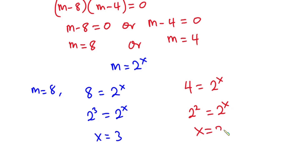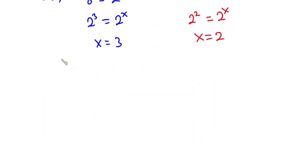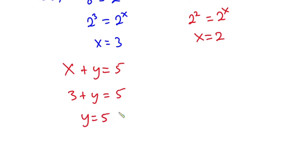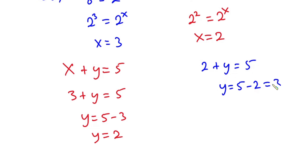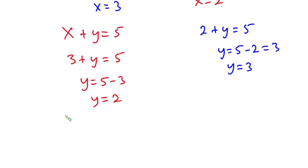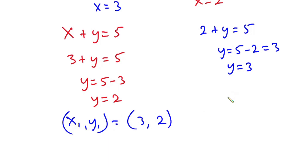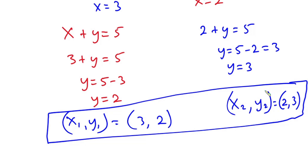Now let's substitute these values into equation 2, that is x plus y equals 5. When x equals 3, we have 3 plus y equals 5, so y equals 2. When x equals 2, we have 2 plus y equals 5, so y equals 3. Therefore our solutions are x₁, y₁ equals (3, 2) and x₂, y₂ equals (2, 3), and this is our final answer.